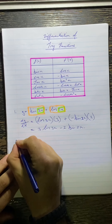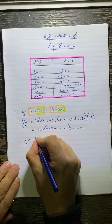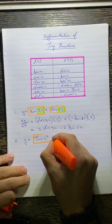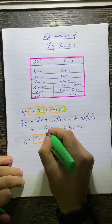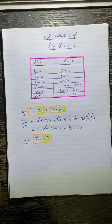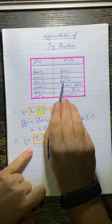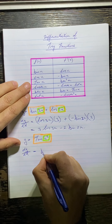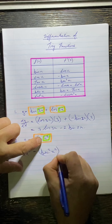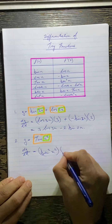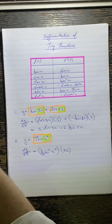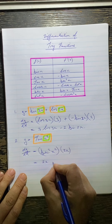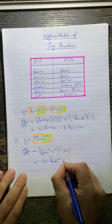Moving on to the second example: y is equal to tan(x²). Grade 11, we've got an outside function and an inside function. We differentiate the outside — the derivative of tan is sec². So dy/dx = sec²(x²), then we differentiate the inside, which gives us 2x. Simplifying: dy/dx = 2x sec²(x²).